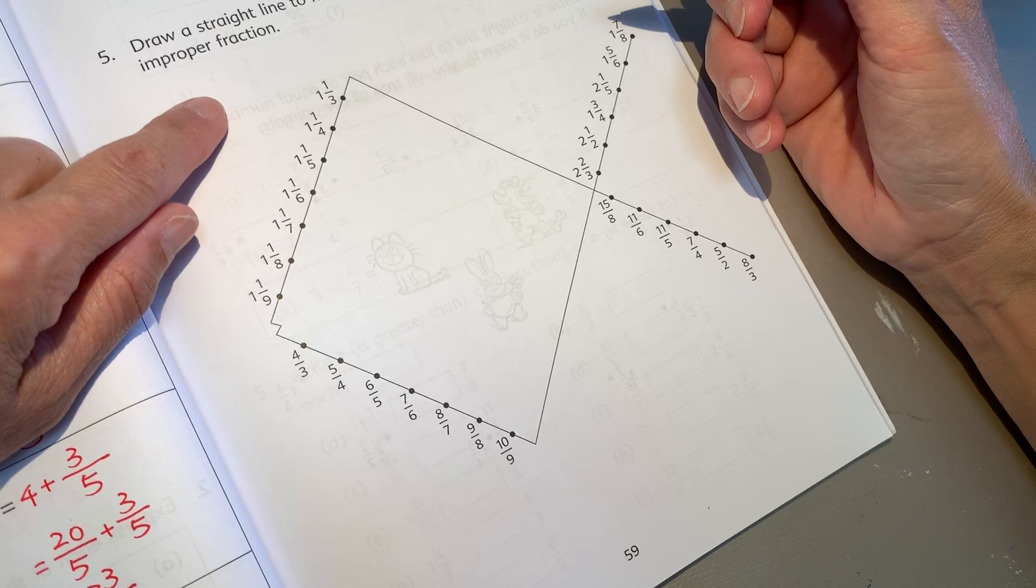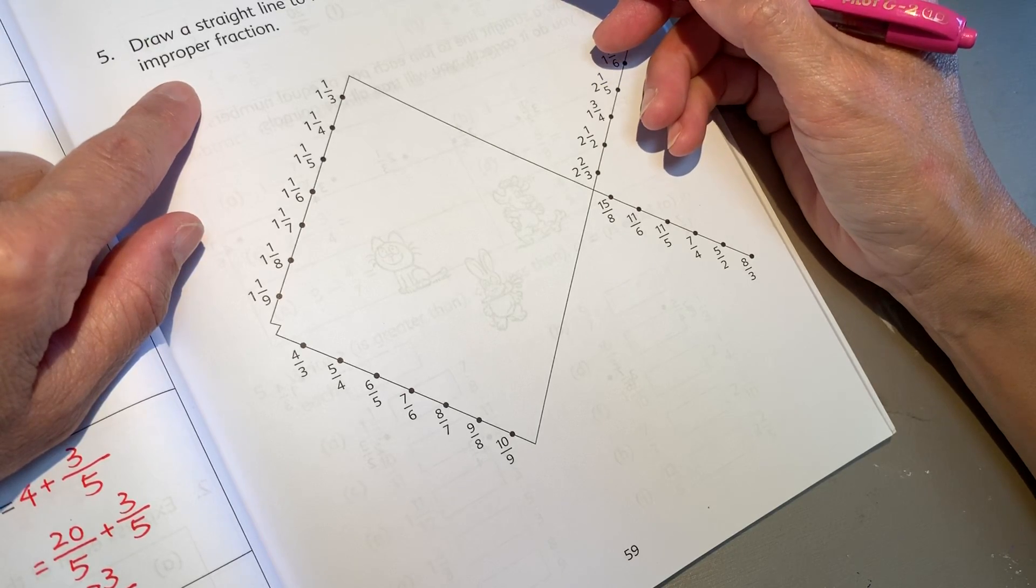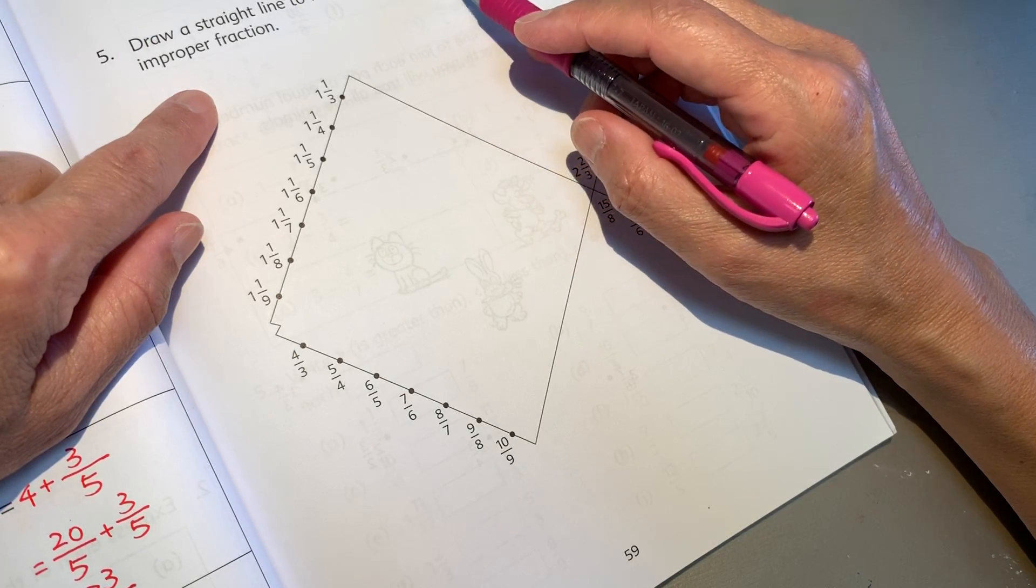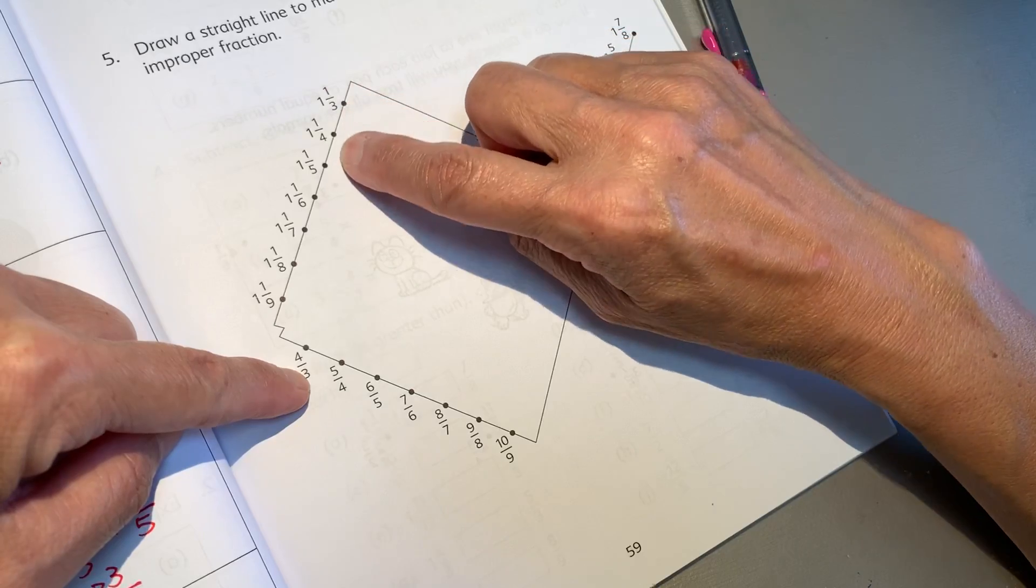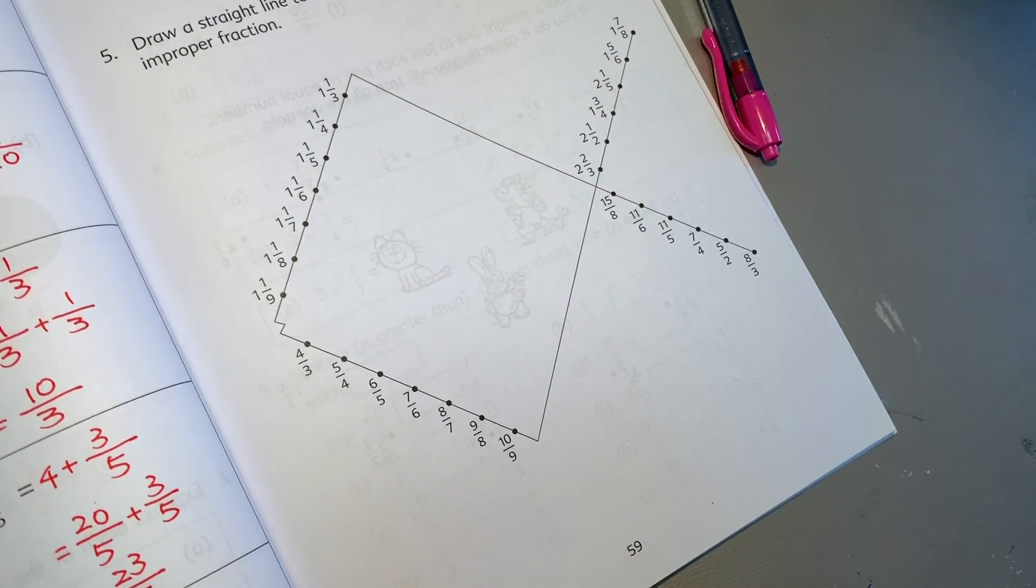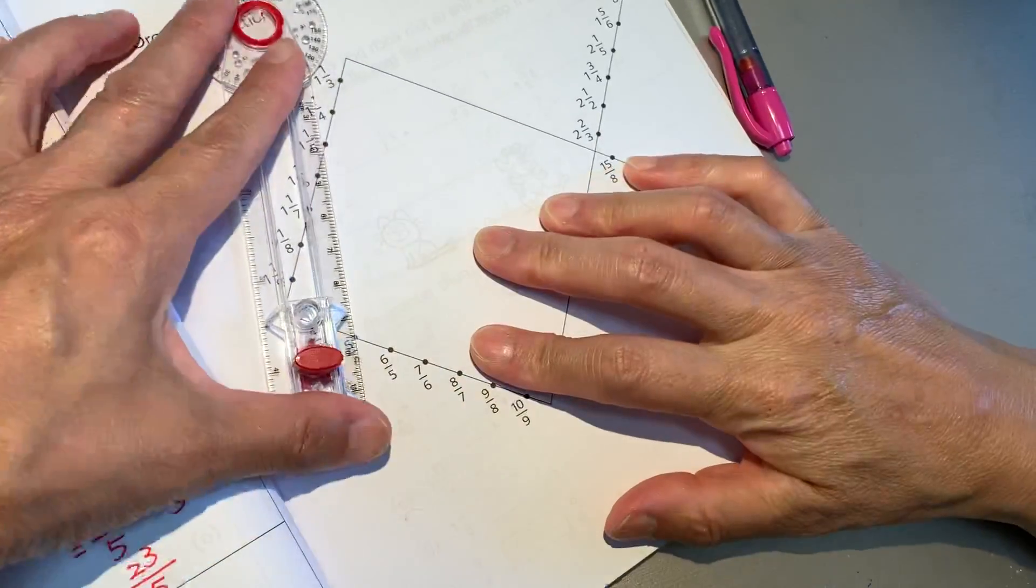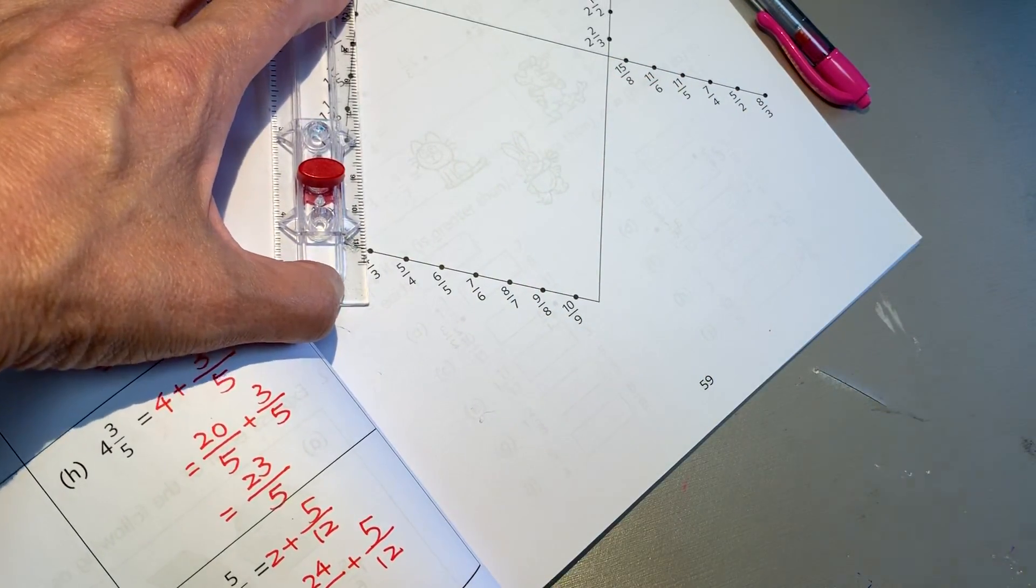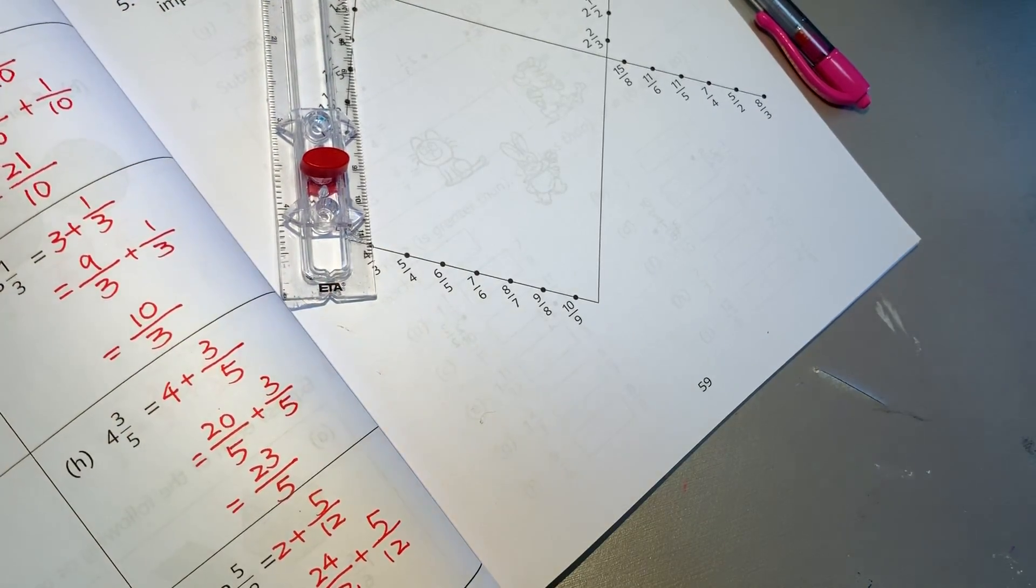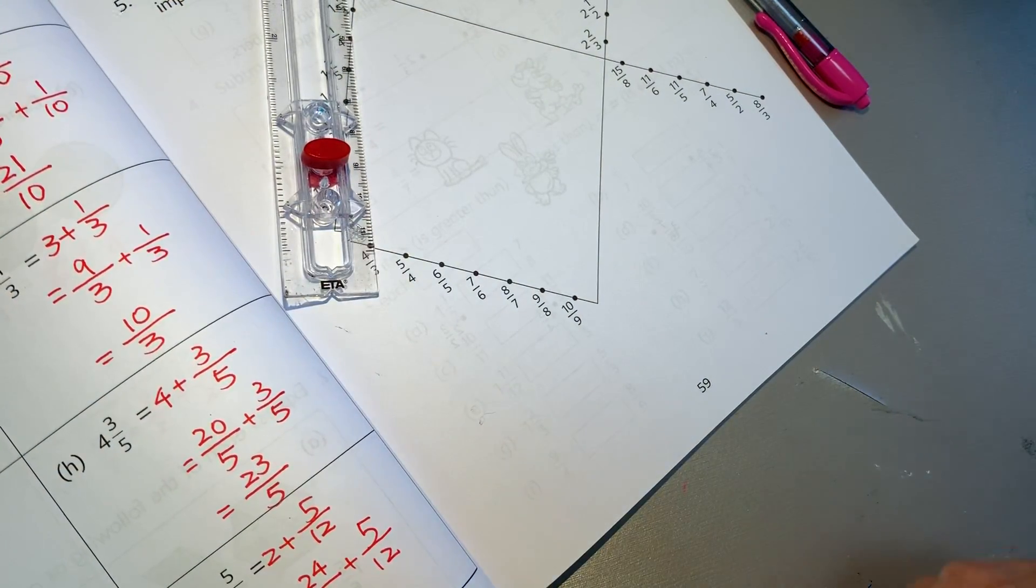Draw a straight line to connect each mixed number with an improper fraction. 一有四分之一等於四分之三. I need a ruler. A straight line means a straight line. OK, I think I will use a pencil to do this job.